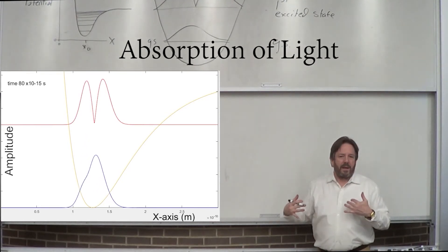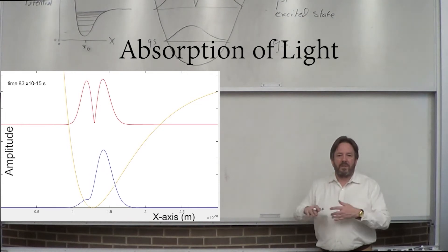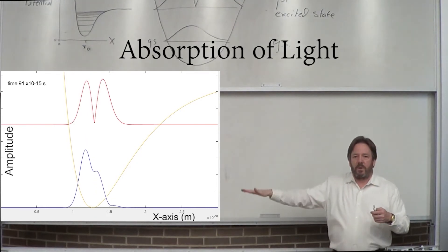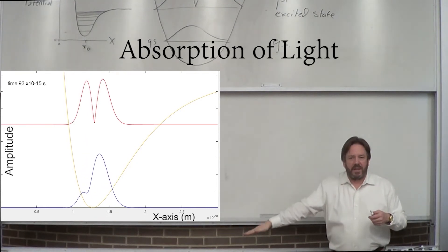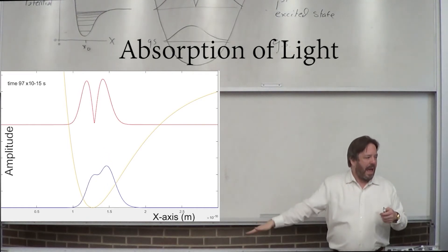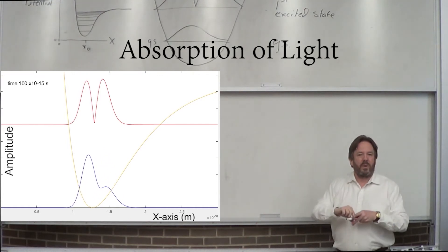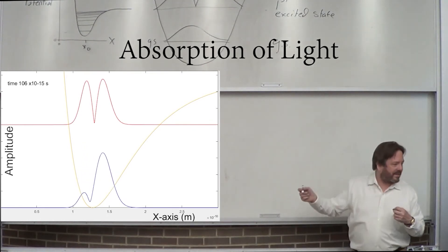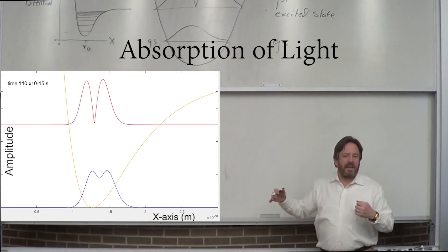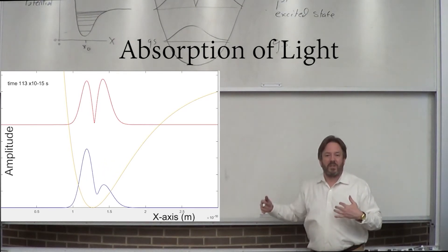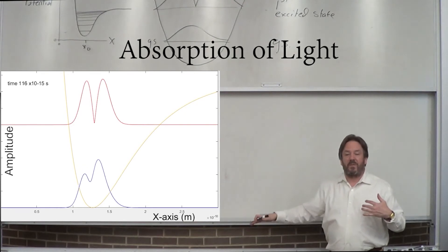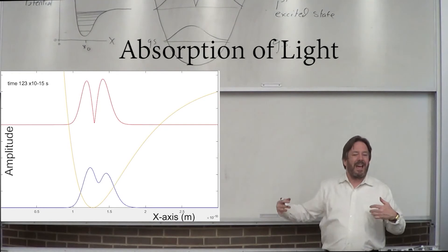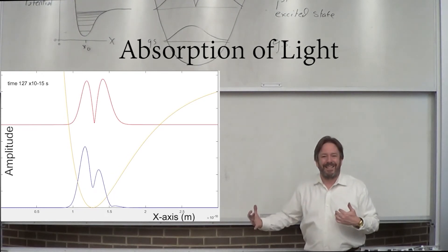The reason that it's responding and moving around is because I have the potential surface rocking back and forth at a certain frequency. That frequency times H, Planck's constant, happens to be the difference in energy between the ground and the first excited state. We're at 100 femtoseconds, and you may notice that as the time-varying electric field — which is a photon of energy equal to the difference between the ground state and first excited state — you notice that the ground state is turning into the excited state.